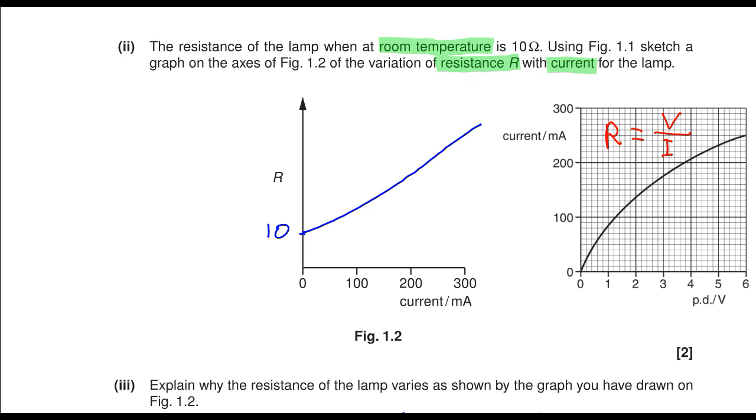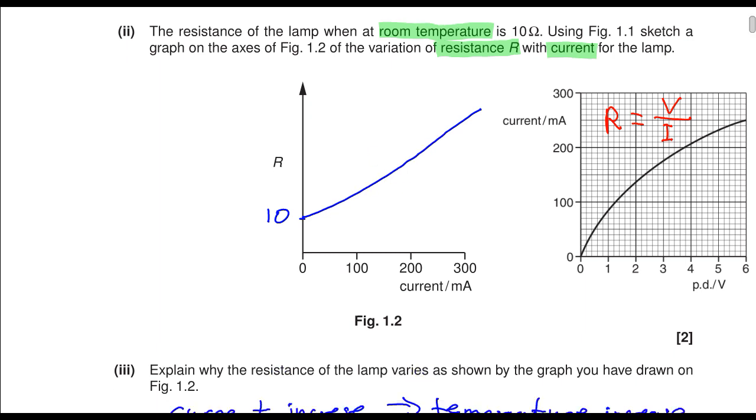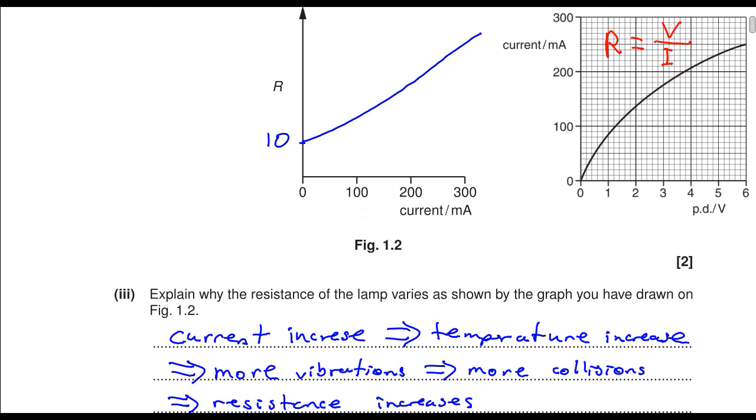We then need to explain why the resistance of the lamp varies in the way shown on this graph. The reason for this is that as the current increases through the lamp, the temperature will also increase because of the heating effects of the current on the filament. Increasing temperature means there are more vibrations of the particles in the filament, and this in turn makes more collisions with the electrons which make up the current.